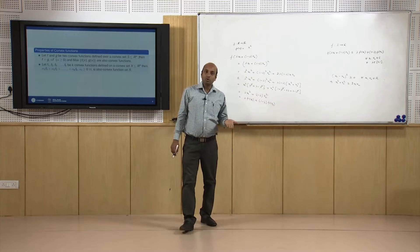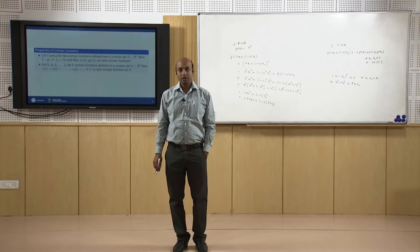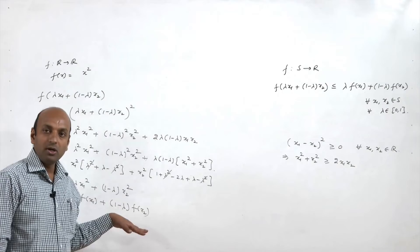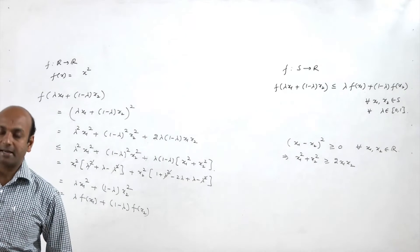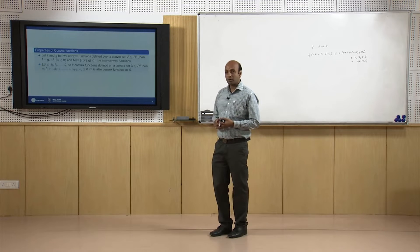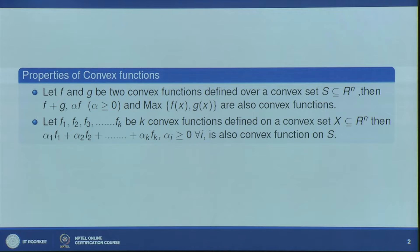Similarly, we can show that −x² is a concave function. Now, what are the properties of convex functions? The first property is: if f and g are two convex functions defined over a convex set S, then their sum is also convex; α·f where α is a non-negative scalar is also convex; and the maximum of two convex functions is also convex.